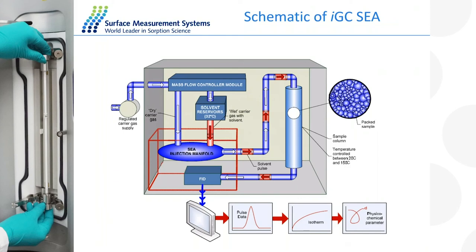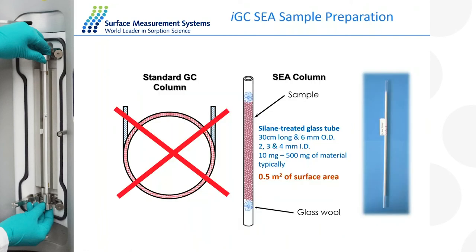The physiochemical property we're interested in today is the Tg, the glass transition temperature. Packing columns is relatively easy — straight columns about a foot long, packed with between 10 and a couple of hundred milligrams of material, and they can be packed literally in five minutes. That column goes inside the machine, and we pass helium gas through it and introduce different molecules.